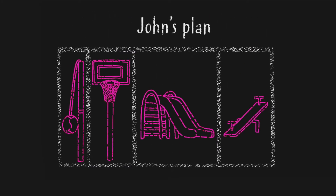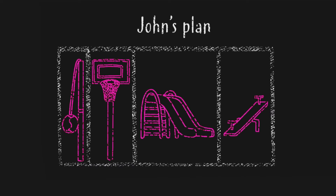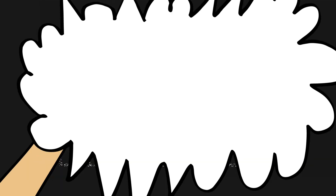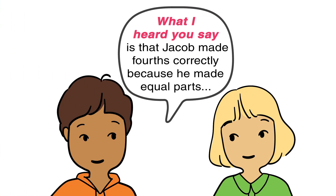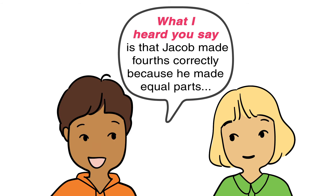Then I noticed that John's rectangle did not have equal size sections. I redrew his rectangle so it would be correct. What I heard you say is that Jacob made fourths correctly because he made equal parts, but John did not. You found a way to correct John's work.